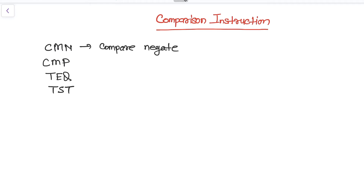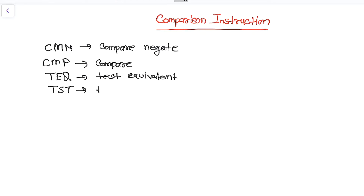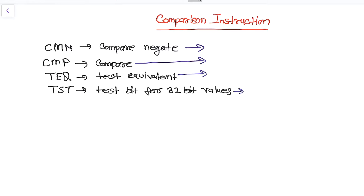So to summarize: CMN is Compare Negate, CMP is a simple compare instruction, TEQ is Test for Equivalent, and TST is Test Bit for 32-bit values. Now let's understand what each one means, starting with CMN, the Compare Negate instruction.